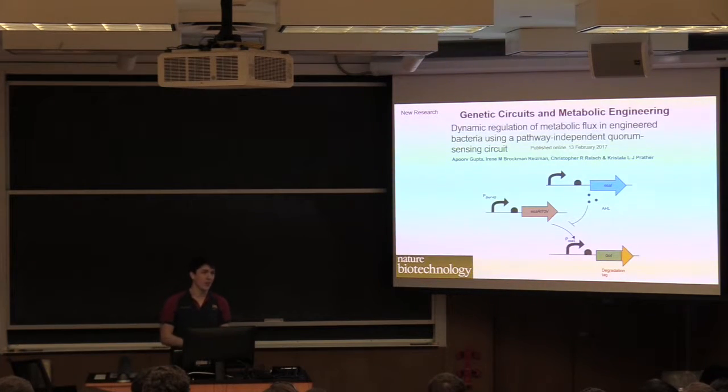On the metabolic engineering front, as you guys probably know, there's this competition at all times between getting your microbe to make the product you want it to and getting your microbe to be happy and grow. And one good way to split the difference is engineer your microbe so that it grows to a high density. And then once it's at a high density, it switches off its growing genes and switches on its make the molecule genes. And that's what these guys did in the Prather lab.